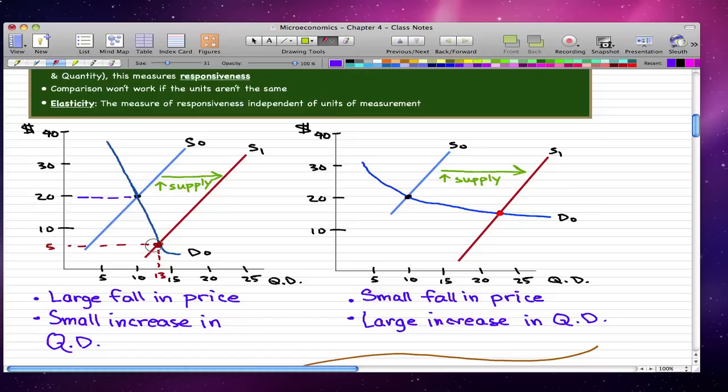From what we learned in the previous videos, this doesn't really make a lot of sense if you think about it right now, because the normal way of thinking is when we have a large fall in price, we would expect a big increase in quantity demanded. I will explain the reason why this happened shortly.